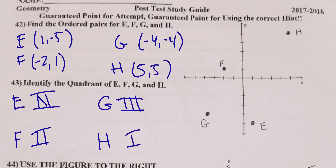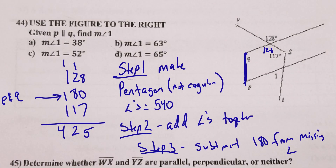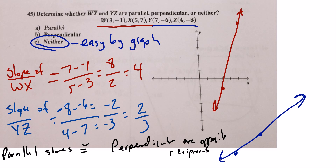Number 42: ordered pairs — remember X is left and right, and Y is up and down. Number 44 is D. There's a pentagon with a 128-degree angle; vertical angles make another 100, and 15, then they form a linear pair which is why that's 65 degrees. I put all the info you need for this one on the hint page. If you have any questions just ask — that finishes this video.